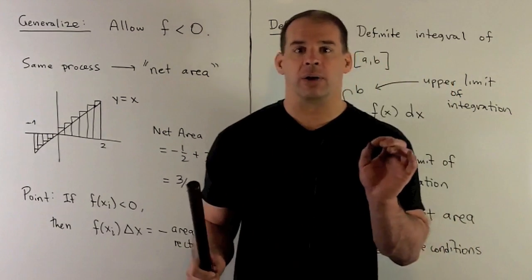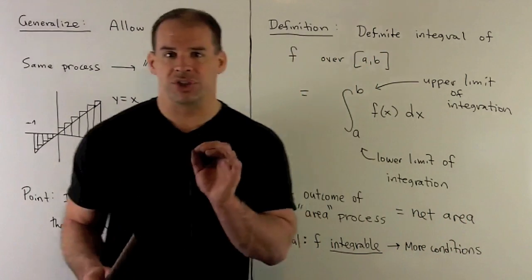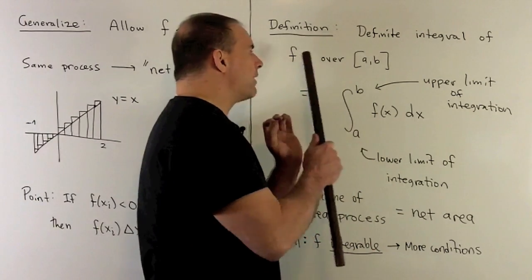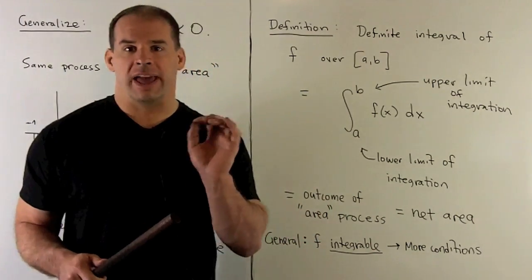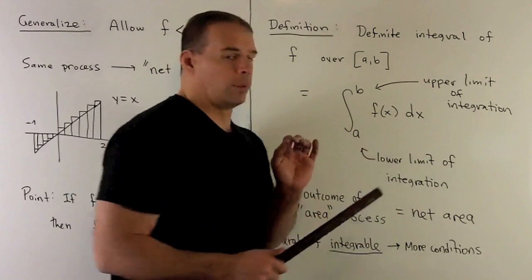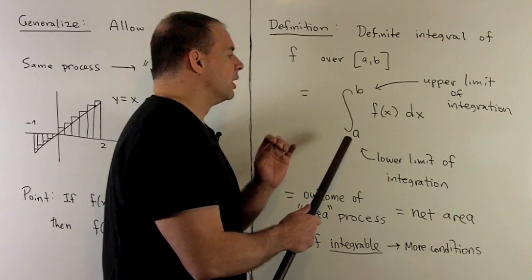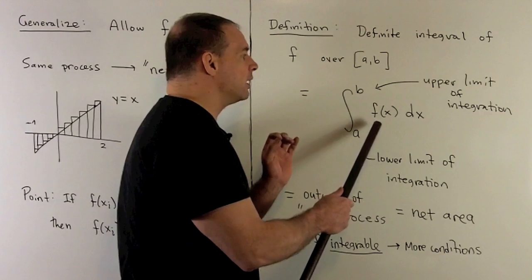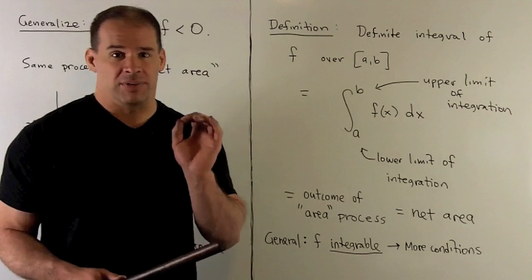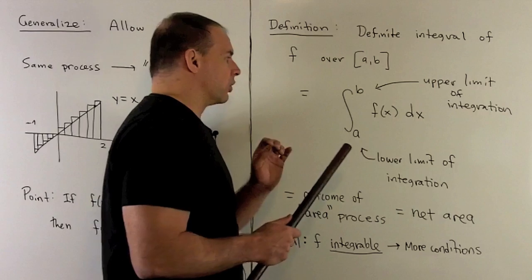Calling this just "area" is really not quite right, so let's give it another name. The definition: we'll recall this net area the definite integral of f over the interval a, b. We write it like an indefinite integral except we have numbers on the integration sign. We still have f(x) as your integrand and the dx tells you that you're integrating with respect to x. Now we have limits of integration — a is the lower limit and b is the upper limit of integration.